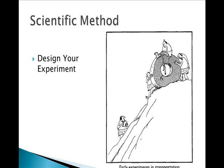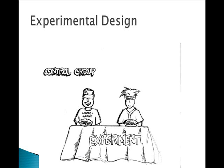Experimental design is the next step, and it must take into account different types of variables, control groups, and controlled conditions, which are also known as constants. The independent variable is the 'I changed it' variable — the one that the experimenter manipulates to see if it creates an effect. In some textbooks, you'll see it called the manipulated variable.